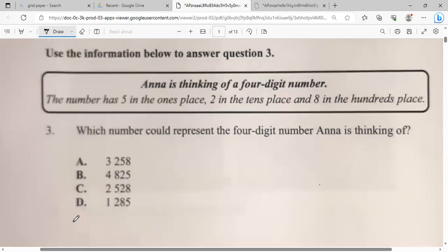She says, use information to answer the question below. Anna is thinking of a four-digit number. The number has five in the one's place, two in the tenth place, and eight in the hundredth place. Which number could represent the four-digit number Anna is thinking of?